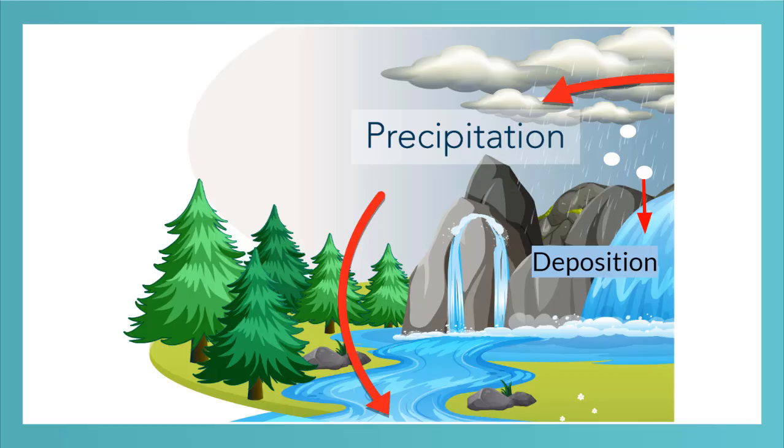Sometimes when it's very cold, water vapor can turn directly into snow or ice and fall to the earth. That process is called deposition.